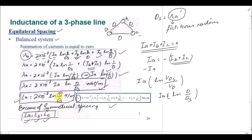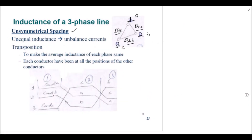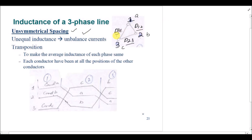Since the three-phase transmission line system has symmetrical spacing, the inductances for conductors a, b, and c are all equal. The inductance formula is L = 2 × 10^-7 × ln(d/ds), where d is the distance between phases and ds is the fictitious radius of the conductor, assuming all conductors have the same radii. Moving to the second part: unsymmetrical spacing, where distances between phases a, b, and c are different — d12, d23, and d31.